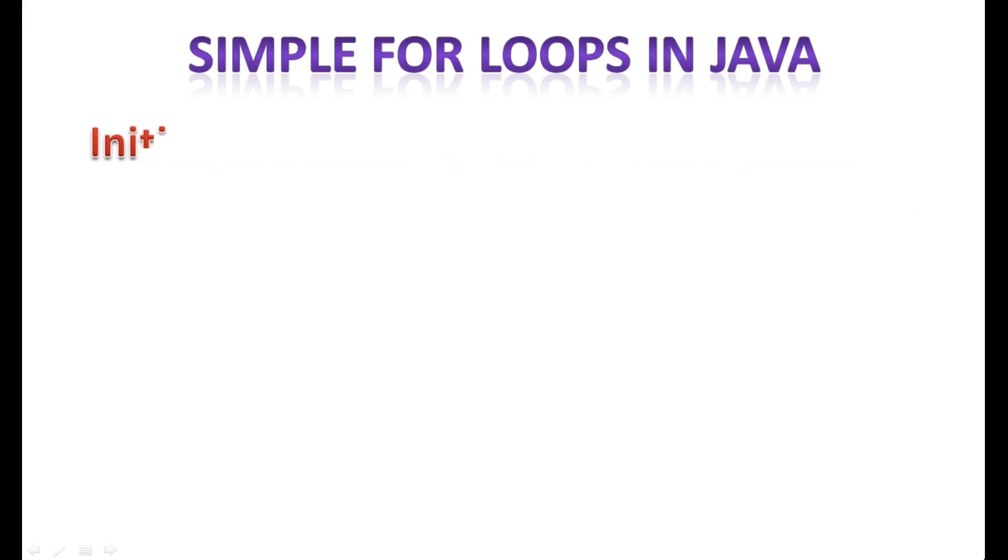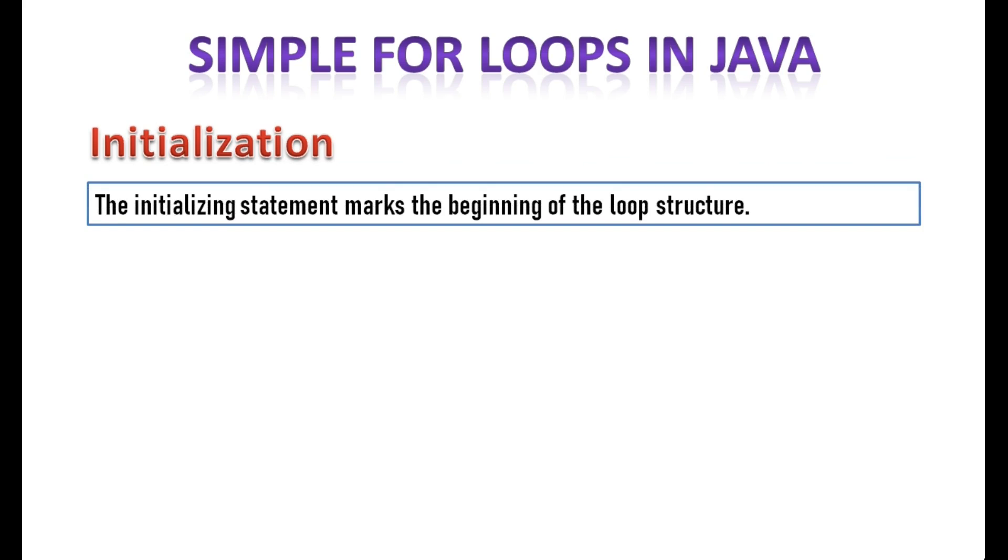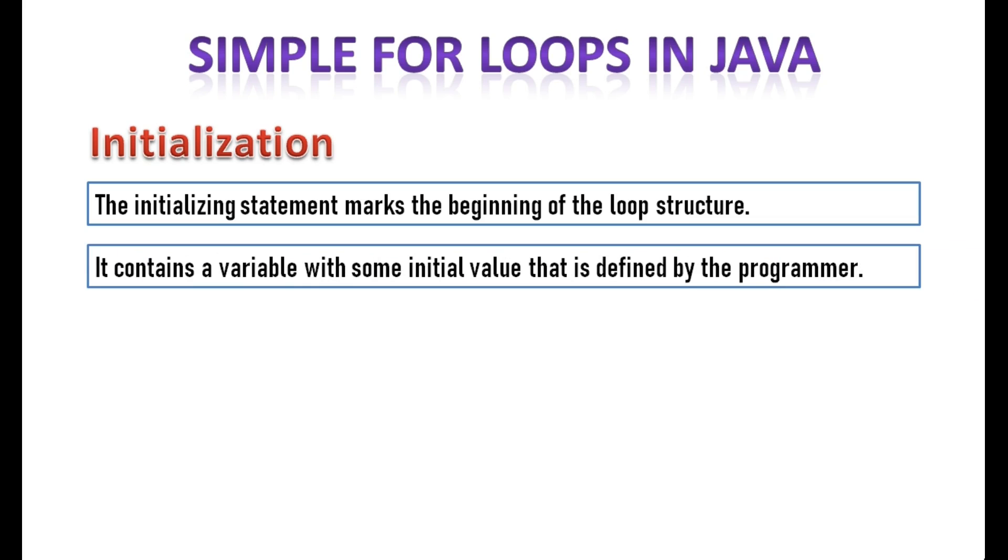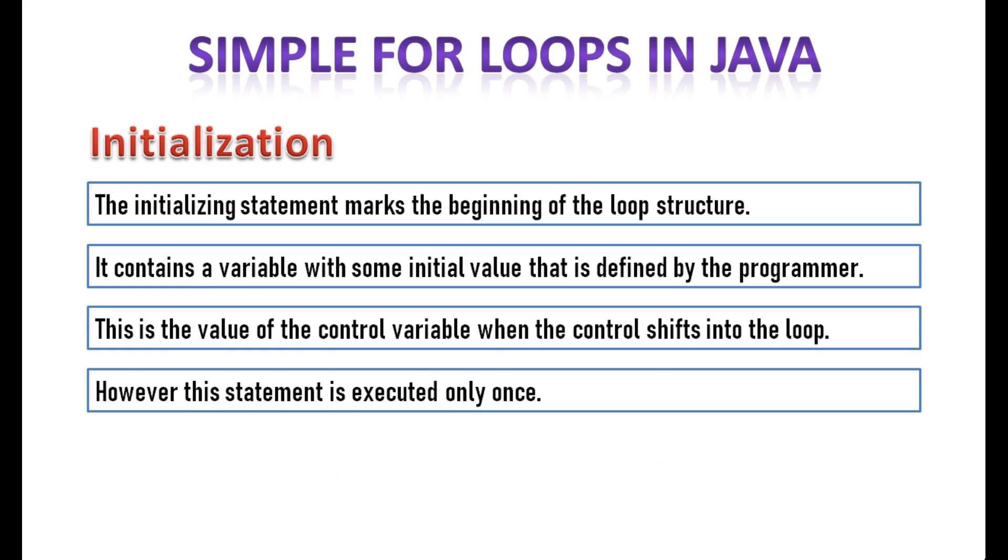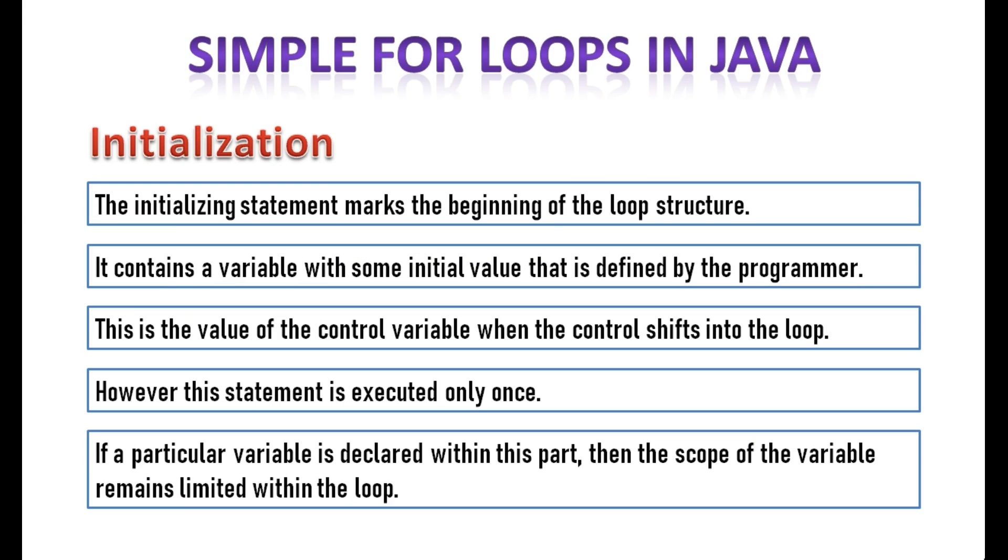The initializing statement marks the beginning of the loop structure. It contains a variable with some initial value that is defined by the programmer. This is the value of the control variable when the control shifts into the loop. However, this statement is executed only once. If a particular variable is declared within this part, then the scope of the variable remains limited within the loop.